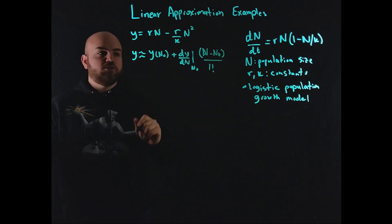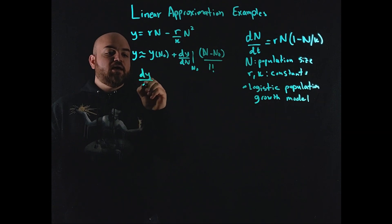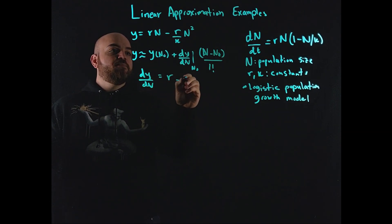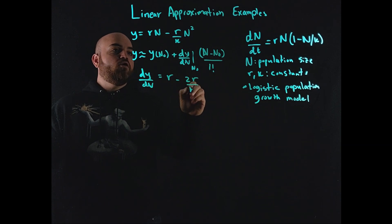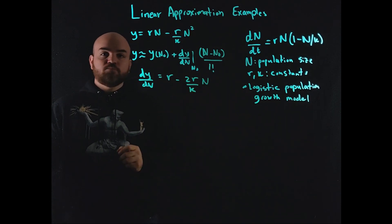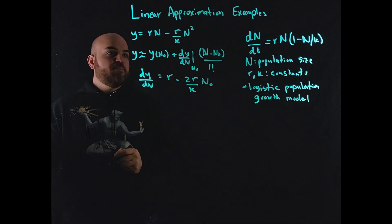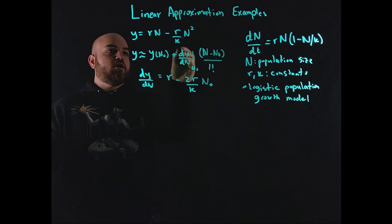So dy by dn, that's equal to r minus 2r over k n, right? And so this is at n naught, right? So this is just the derivative of this term, right? With respect to n, we get r. With respect to n here, we get 2r over k n naught, right? So I need to substitute n naught.